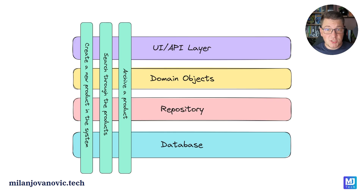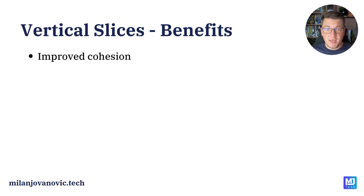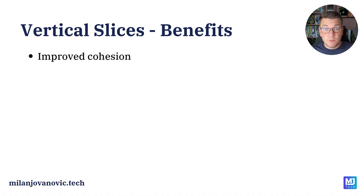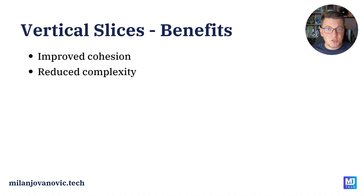All of this will make much more sense when we move into the practical examples. Let's discuss the actual benefits of organizing your system around vertical slices. The first benefit is improved cohesion, because all the components needed to implement one use case are grouped close together in your codebase. This also means lower complexity, since we need fewer moving parts to implement a use case.